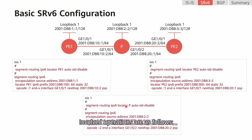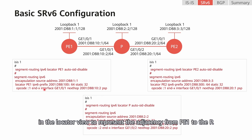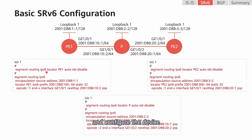The involved operations are as follows. First, enable SRv6 globally. Then, configure a source address for SRv6 encapsulation. After that, create a locator and configure an end.x SID in the locator view to represent the adjacency from P1 to the P. After completing the configurations, we need to enable SRv6 in IS-IS and configure the device to advertise the corresponding locator route.